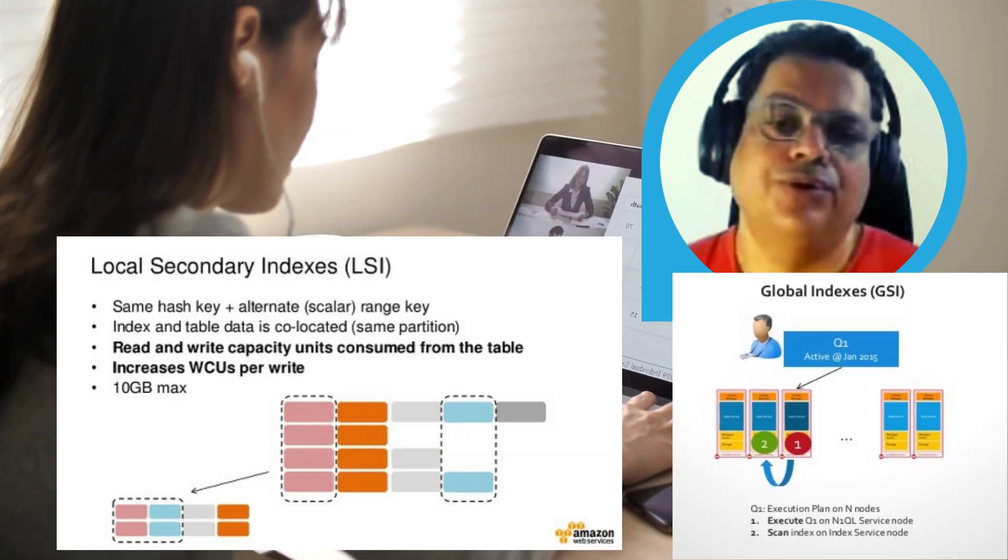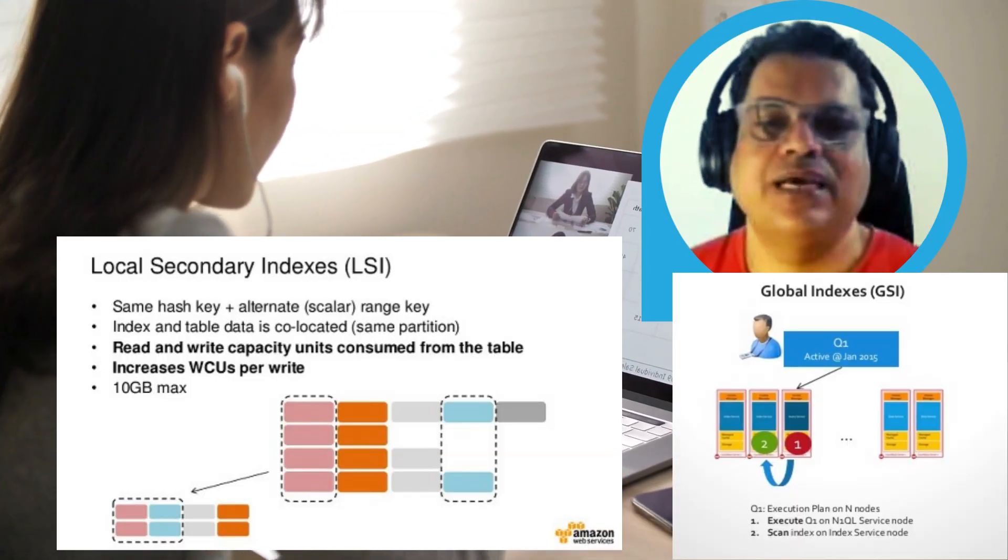That's why usually in real projects you need a composite primary key concept where you have a partition key and sort key. By using these two factors, you can create different kinds of filters or arrangements of your data. That will make your NoSQL database concept more usable. Let's move on to the next concept.